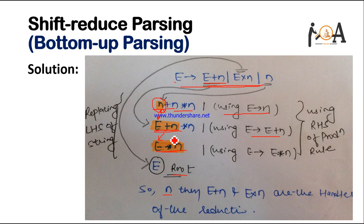So here, N, E plus N, and E multiply with N are the handles in the given reduction. If you have any doubt or query about handles or shift-reduce parsing, you can ask in the comment section and we will try to solve your query as early as possible. Thank you so much guys, I hope you have understood it. Have a nice day!